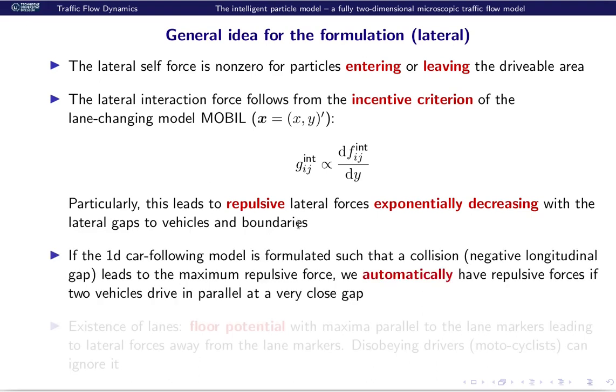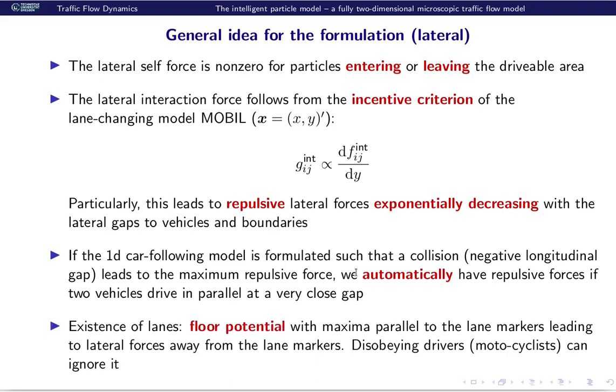Moreover, if the car-following model is formulated such that a collision leads to a maximum repulsive force, we also have this exponentially decreasing force at close lateral gaps for neighbors driving in parallel. Finally, we can introduce lanes by a floor potential with a maximum parallel to the lane markers. Some traffic participants can also disobey lanes, for example, motorcyclists.